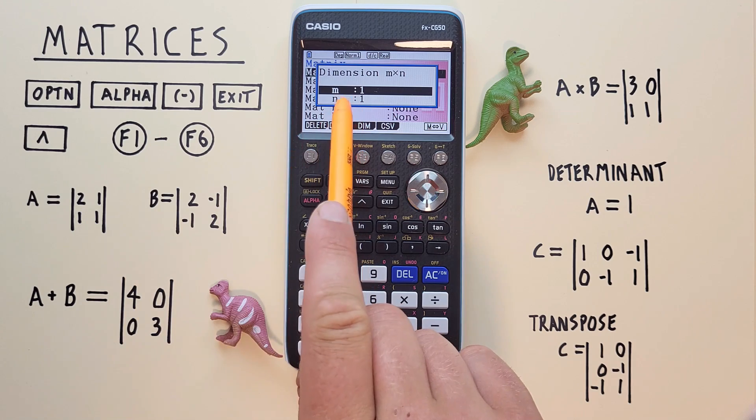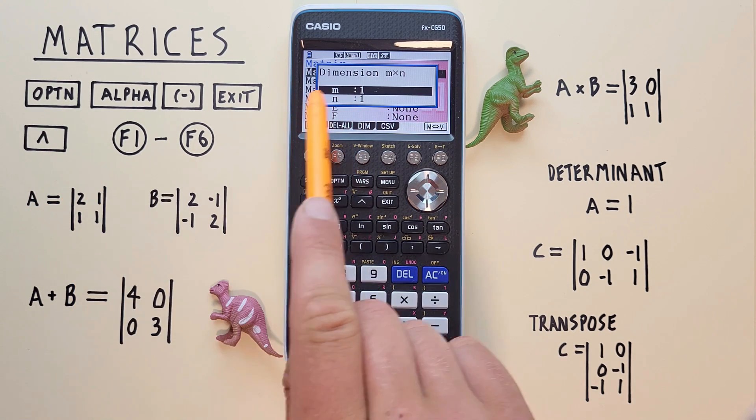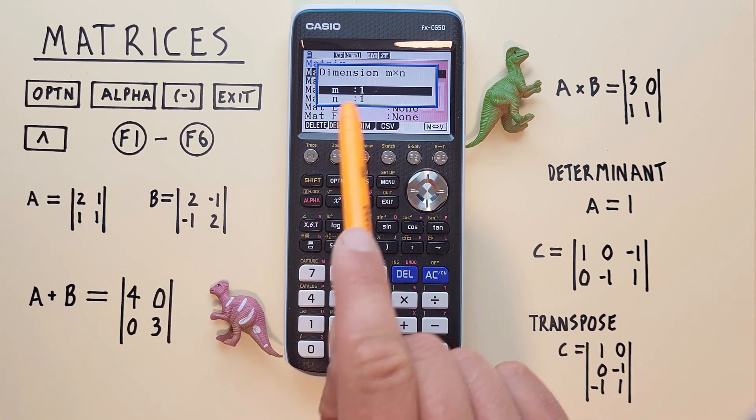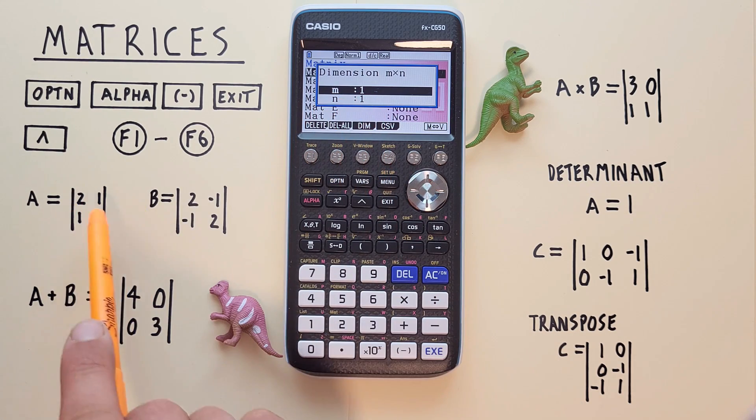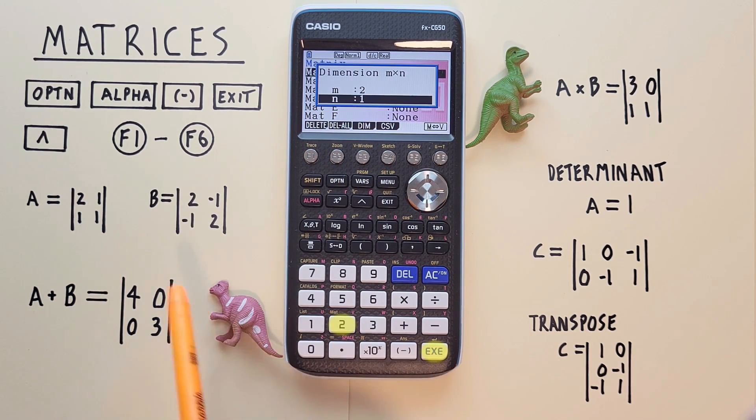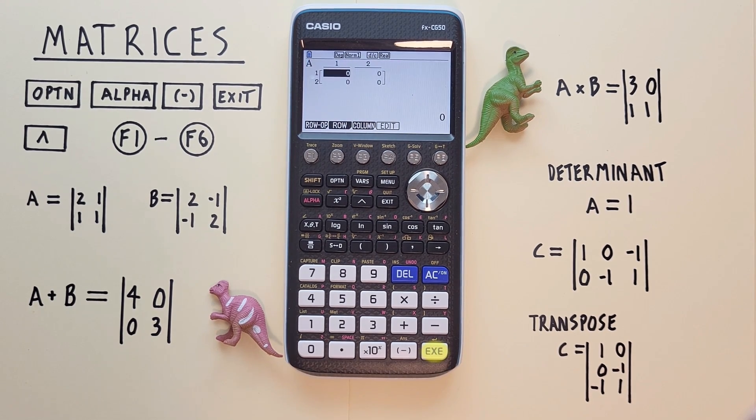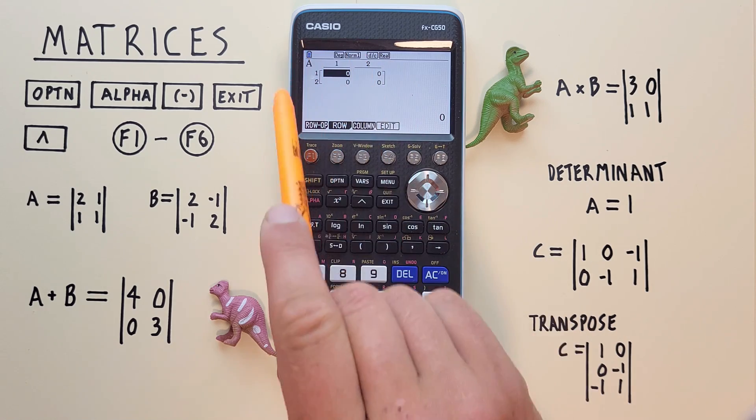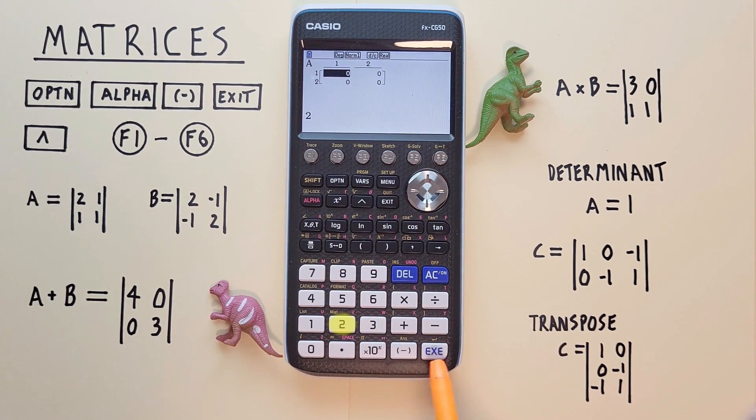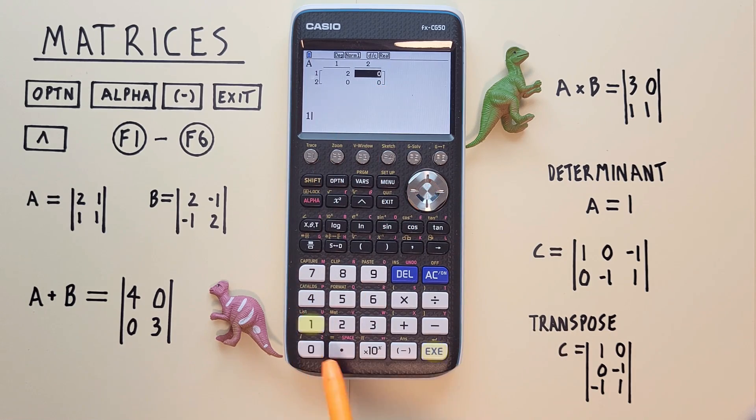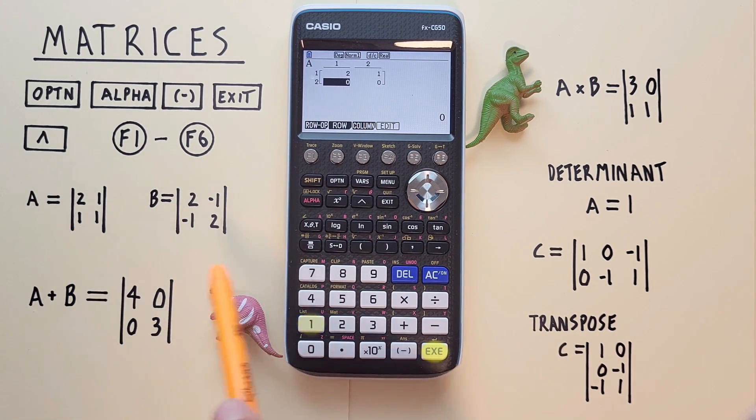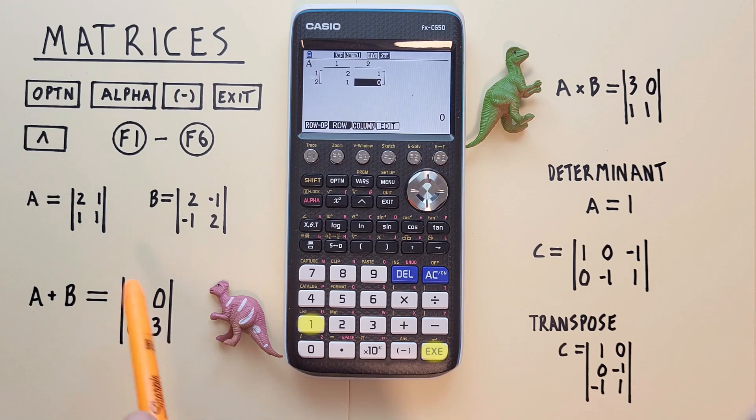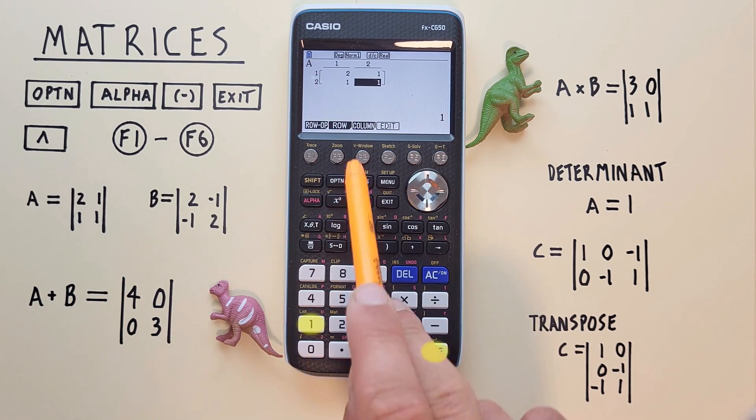We'll enter our first matrix into the matrix A slot. So we just highlight it and select it. It'll ask us what dimensions we want. Let's go ahead and enter our A and B matrices. Our first one will be matrix A where we have rows and columns. M is the rows so we have two rows, and N is the columns. So we enter 2×2, hit EXE, and now we can go ahead and enter our data: 2, 1, 1, and 1. There we go. We've got our A matrix entered.